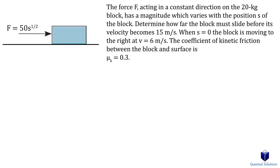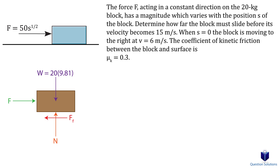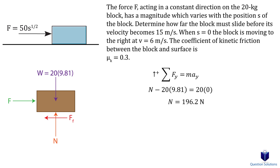To find the frictional force, we draw a free body diagram showing the weight, normal force, the variable force, and the frictional force. Writing an equation of motion for the vertical forces: since the variable force has only an x component, the only forces in the vertical direction are weight and normal force. Since the box only moves horizontally, there is no vertical acceleration. We solve for the normal force, then find the frictional force by multiplying the normal force by the coefficient of kinetic friction.